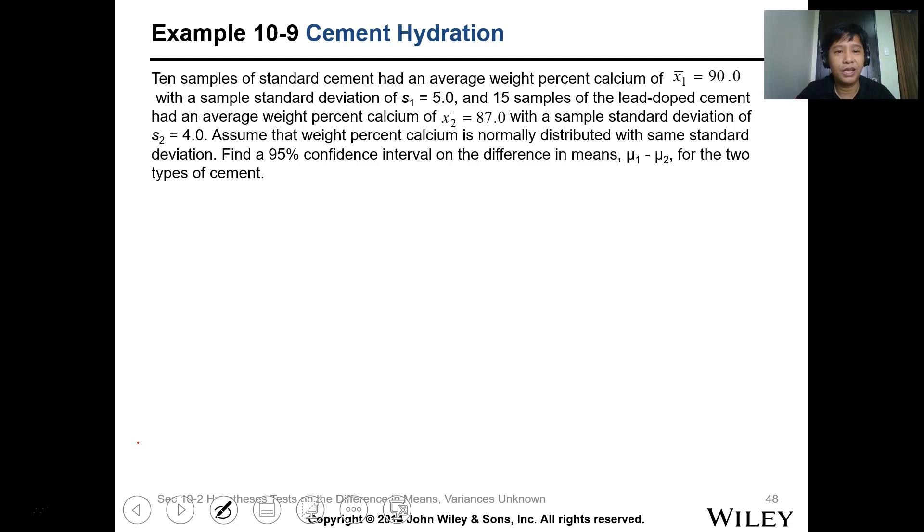Now let's have this example. We have 10 samples of standard cement with an average weight percent calcium x1 bar of 90.0 with a sample standard deviation s1 of 5.0, so n1 is 10, the mean is 90.0, and the standard deviation is 5.0. Then we have 15 samples of lead-doped cement where the average weight percent calcium x bar 2 is 87.0 and the sample standard deviation is equal to 4.0. Assume that the weight percent calcium is normally distributed with same standard deviation. Find the 95 percent confidence interval, so two-sided interval.